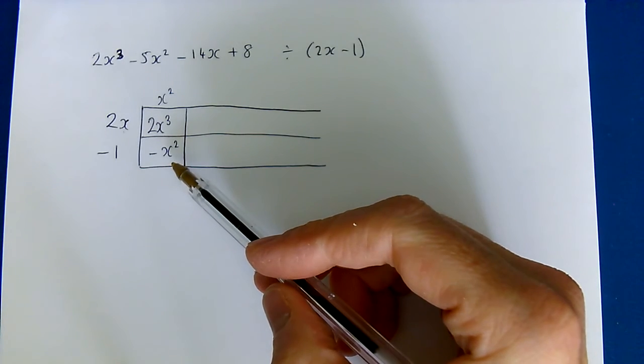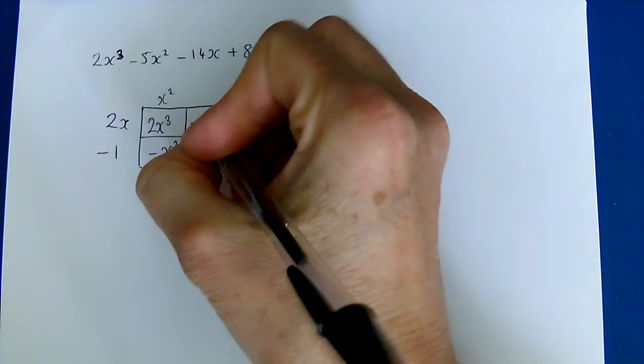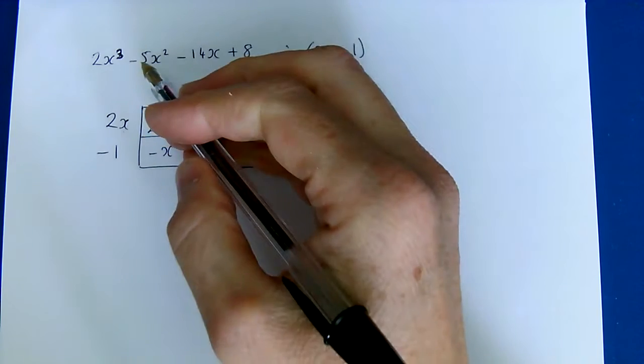Okay, but we don't want negative x squared, we want negative 5x squared, so we need an extra negative 4x squared so that these will add up to negative 5x squared.